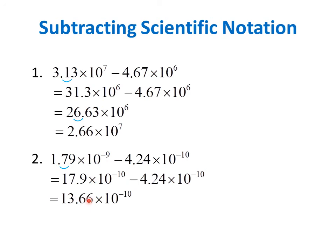Notice that this difference has 2 digits before the decimal point. If we want to write the final answer in scientific notation, we have to move this decimal point one place to the left. So we get 1.366, and the 6 becomes 7 because it is followed by 6, which is greater than 5 — so 1.37 times 10 to the negative 10. Remember, we moved the decimal point one place to the left, so the exponent becomes larger by 1, giving us times 10 to the negative 9. If you have any questions, please leave a comment.